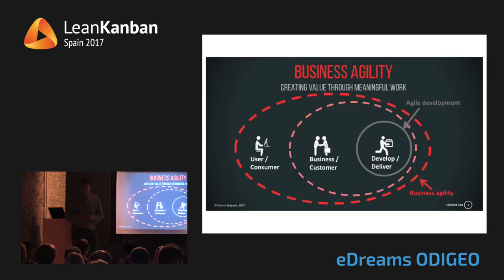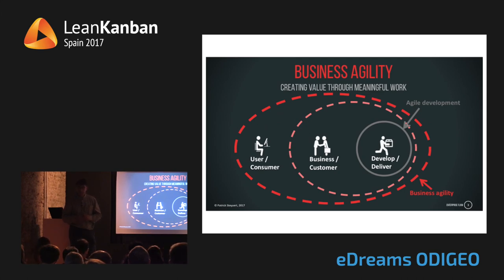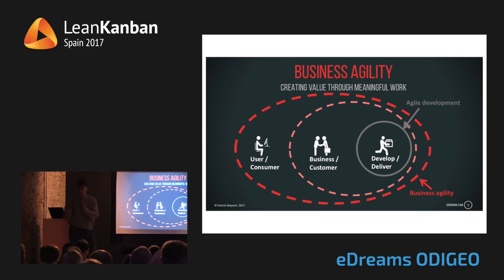What organizations today are looking for is not just agile development. The figures I showed are figures in terms of becoming better at agile development. What organizations are looking for today is business agility — it's including the customer, the business, engaging the whole organization, even your users or consumers into the process. We need to look not just at that little part — we need to look at the whole.